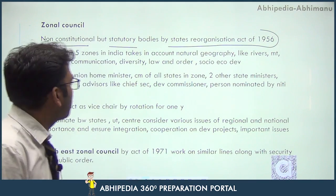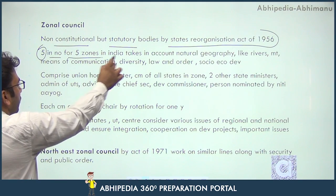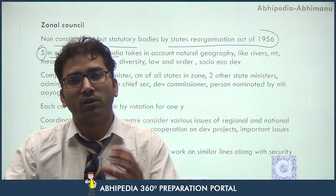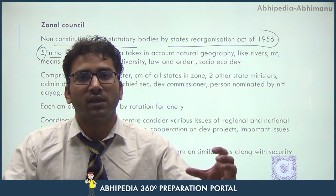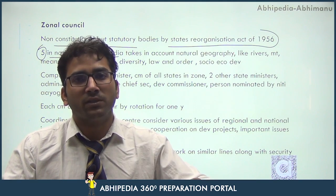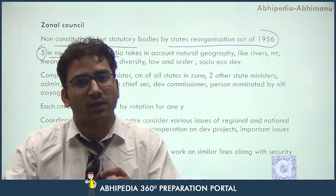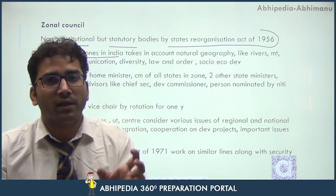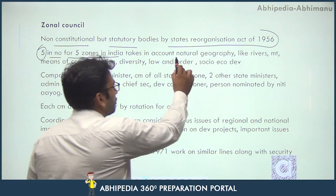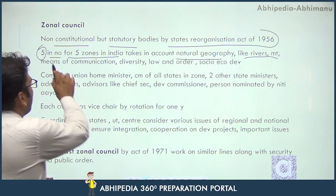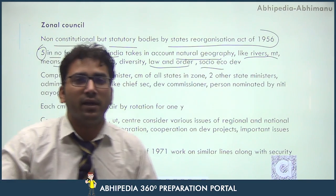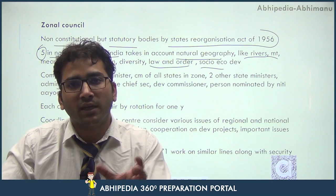By the State Reorganisation Act of 1956, five Zonal Councils were created for five zones in India: North, Central, South, East, and West. India has been divided into five parts, with each zone having its own Zonal Council. The zones are defined on the basis of natural geography like rivers and mountains, means of communication, diversity, law and order, and socio-economic development.